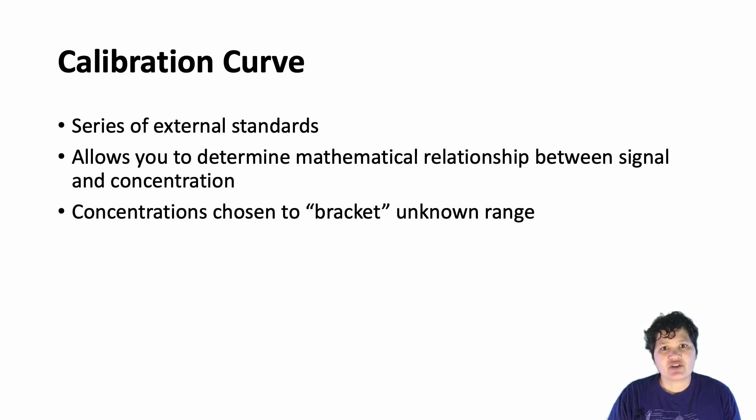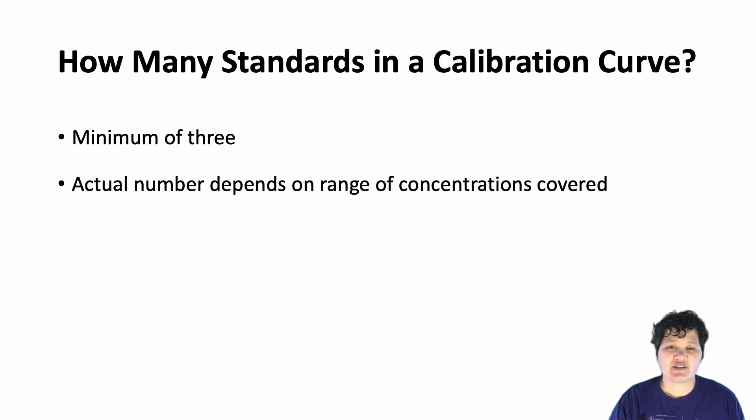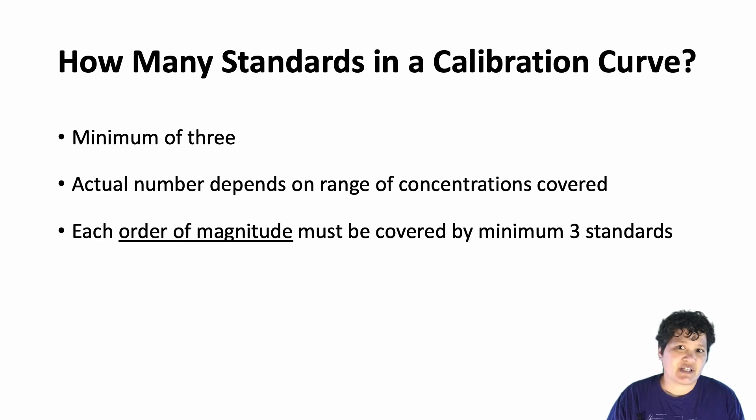So you have to guess at a range in which the concentration will fall and make your calibration curve cover that range. So how many standards should you have in a calibration curve? First of all, you always need to have a minimum of three. But the more important thing is to look at the range of concentrations that you are covering. For each order of magnitude that is factors of 10 in your range, you must have three standards. As long as that is true, you can have any number of standards. In general, the upper limit is determined by your willingness to actually make those standards in lab.